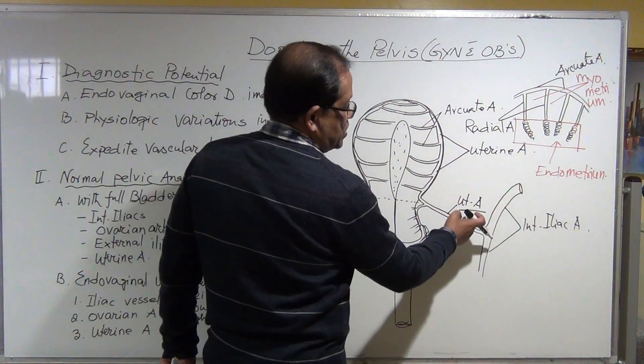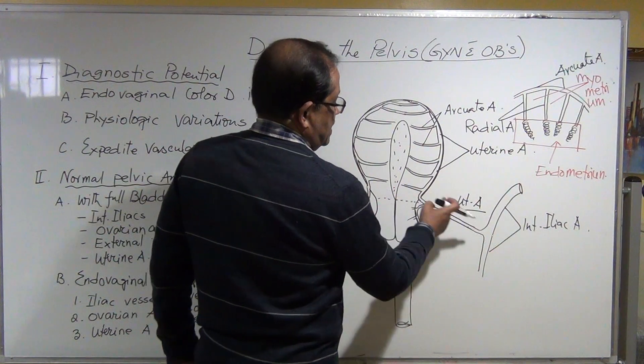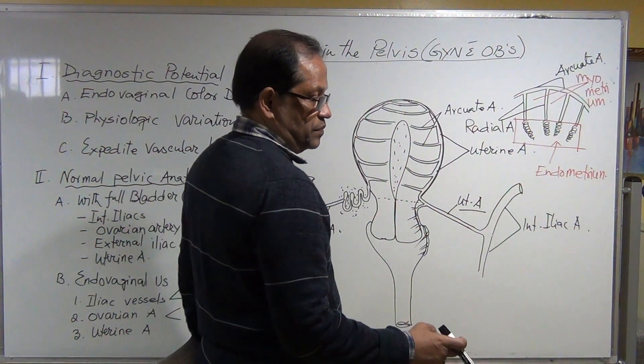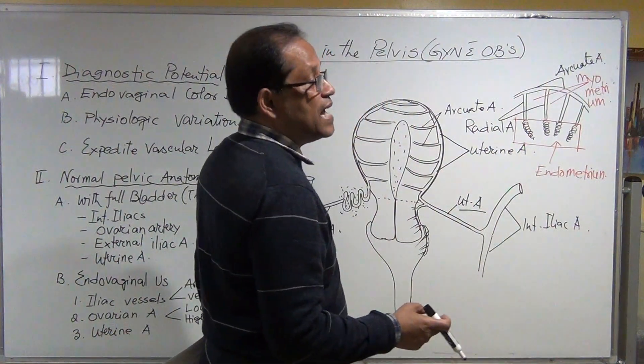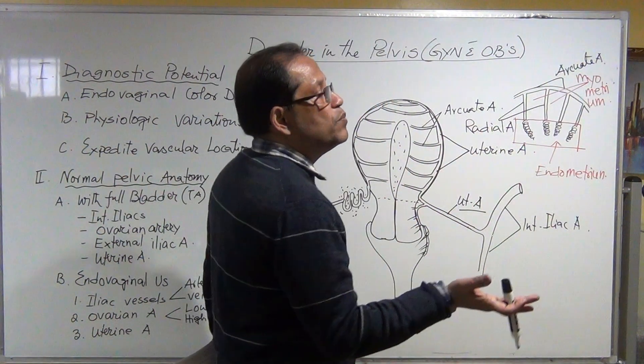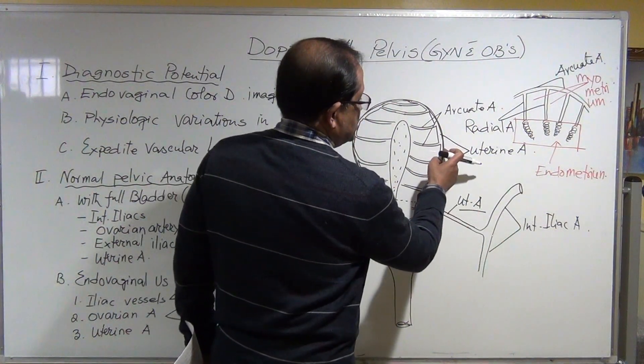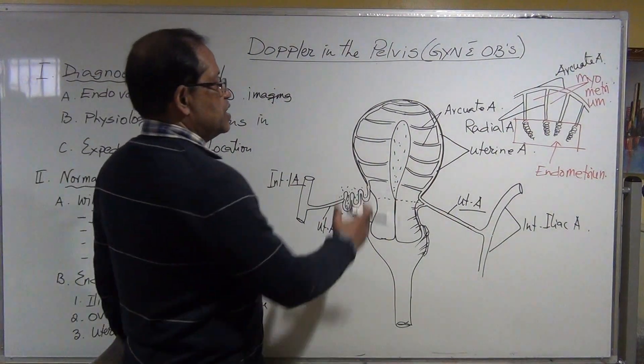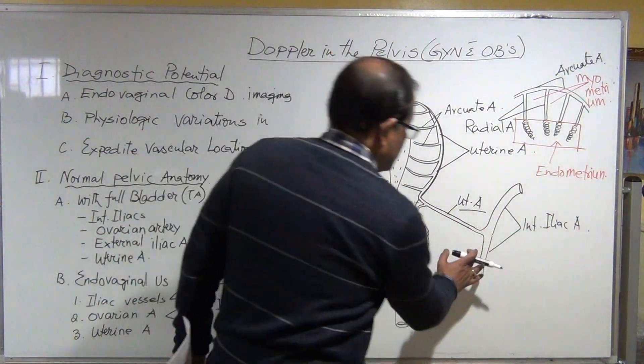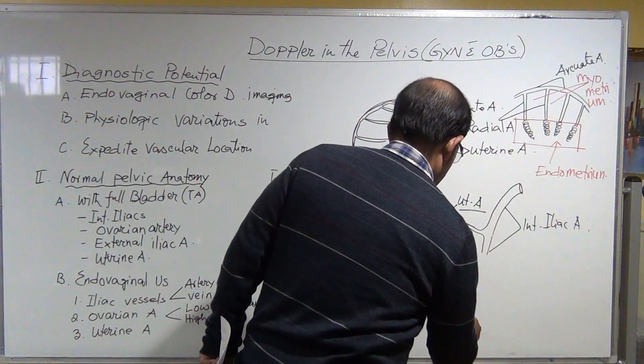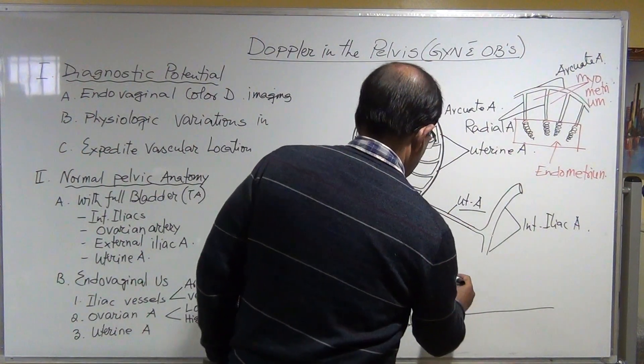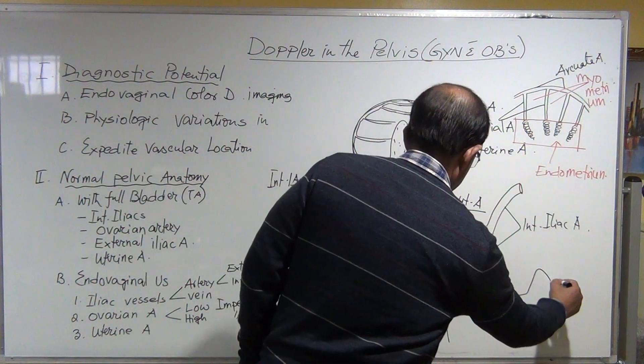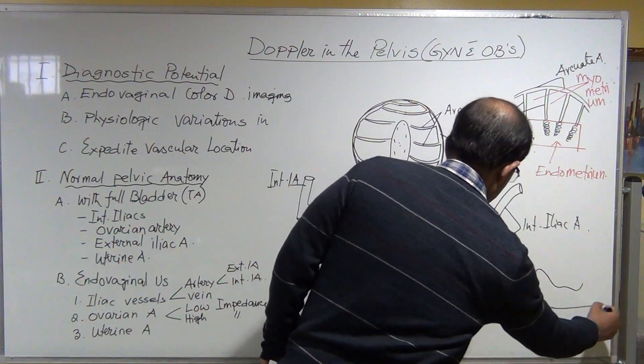If the pregnancy is there, then you will see the uterine artery has a low peak systolic and high end diastolic, and the diastolic flow will be more. You are going to get the same thing in this uterine artery, the same thing in the arcuate artery. Why? Because resistivity index is low.